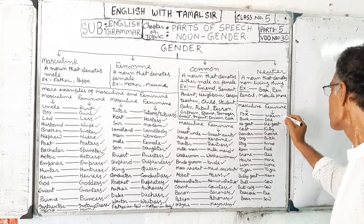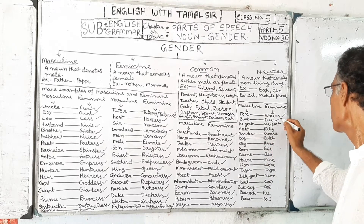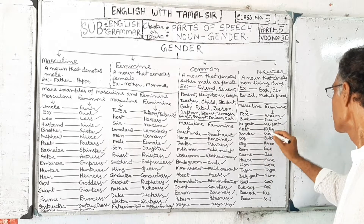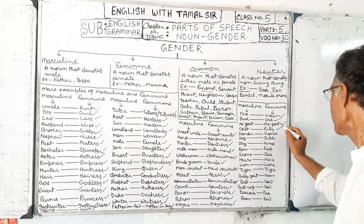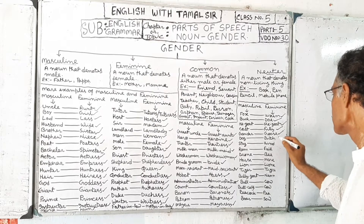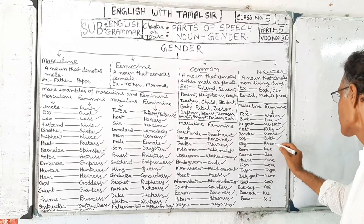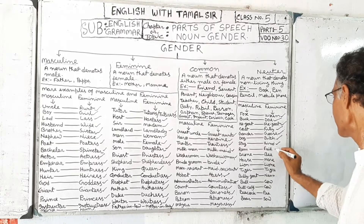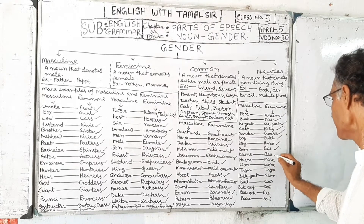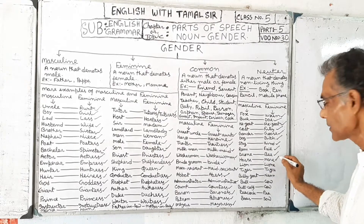Animal gender pairs: fox / vixen, buck / doe, he-goat / she-goat, colt / filly, gander / goose, dog / bitch, stag / hind, ram / ewe, drone / bee, horse / mare.